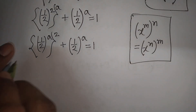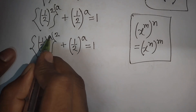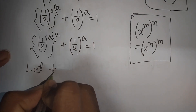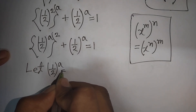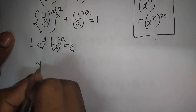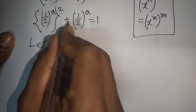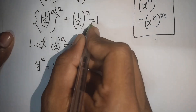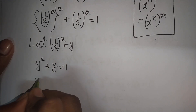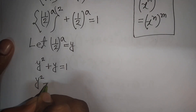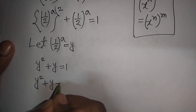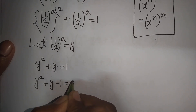We see that (1/2)^a appears in both terms, so let y equal (1/2)^a. Our equation becomes y squared plus y equals 1. Moving 1 to the left side gives y squared plus y minus 1 equals 0.